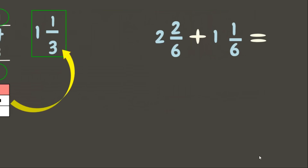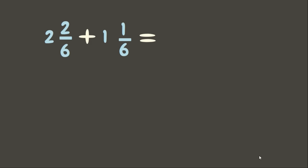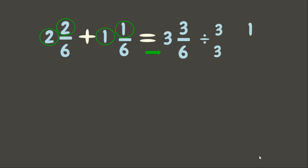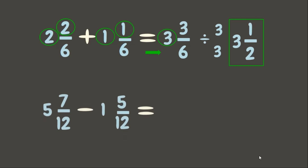Great job! Now it's time to add mixed numbers. First, add the numerators: two plus one is three. Copy the denominator six, then add the whole numbers: two plus one is three. Simplify your answer — we just copy the whole number. Therefore our final answer is three and one-half.